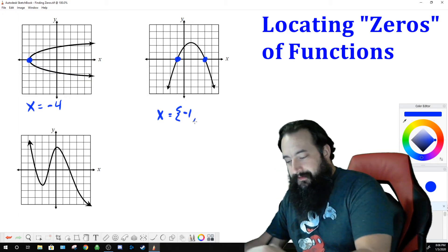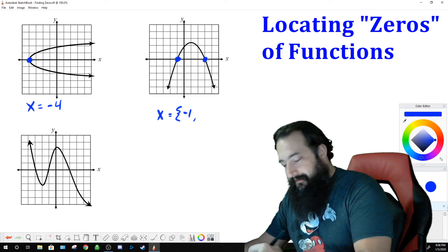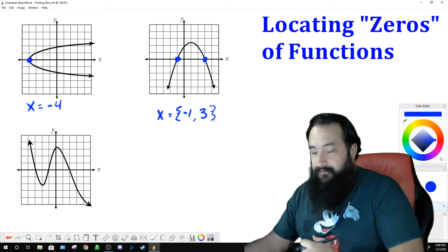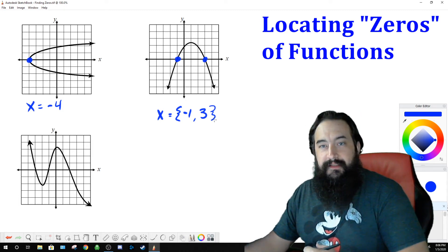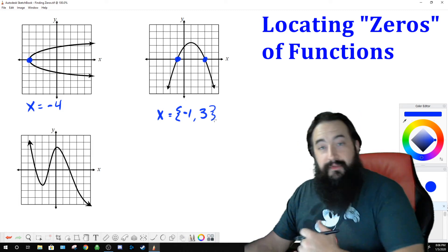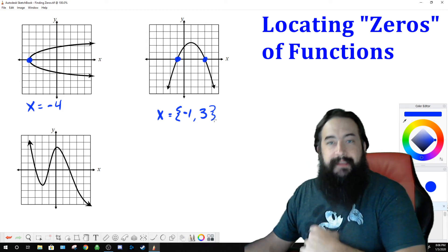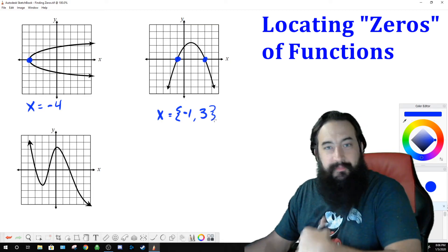Also, the value here is three. So the two zeros, forgive my really bad curly brackets, I'm getting used to that too. So the zeros on this graph, for this function, are negative one and three. Simple. Nice work.